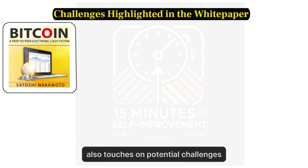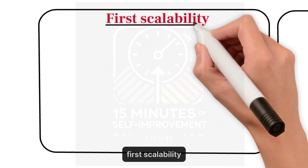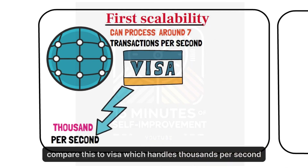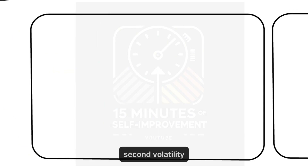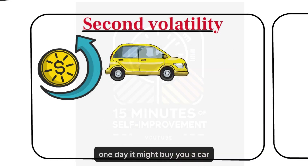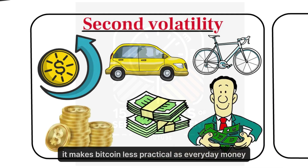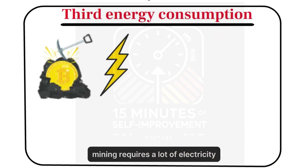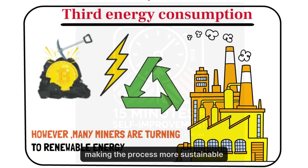The Bitcoin white paper also touches on potential challenges and limitations. First, scalability — Bitcoin's network can process around seven transactions per second. Compare this to Visa, which handles thousands per second. It's like having a two-lane highway for a growing city. Second, volatility — Bitcoin's price can swing wildly. One day it might buy you a car, the next it might only buy a bicycle. While this excites investors, it makes Bitcoin less practical as everyday money, at least for now. Third, energy consumption — mining requires a lot of electricity, leading to criticism about its environmental impact. However, many miners are turning to renewable energy, making the process more sustainable.